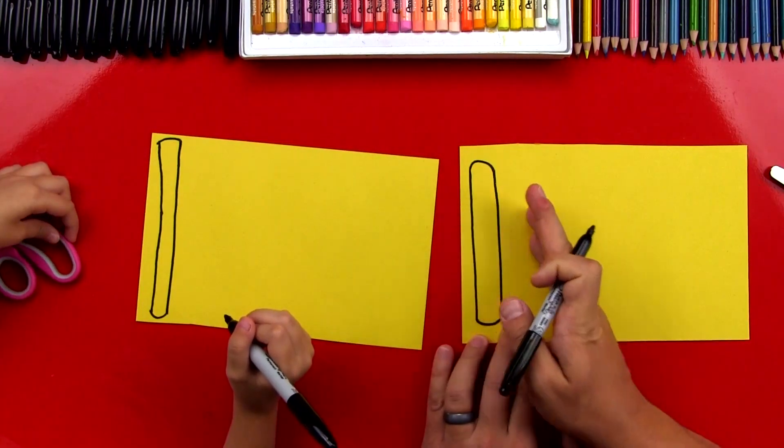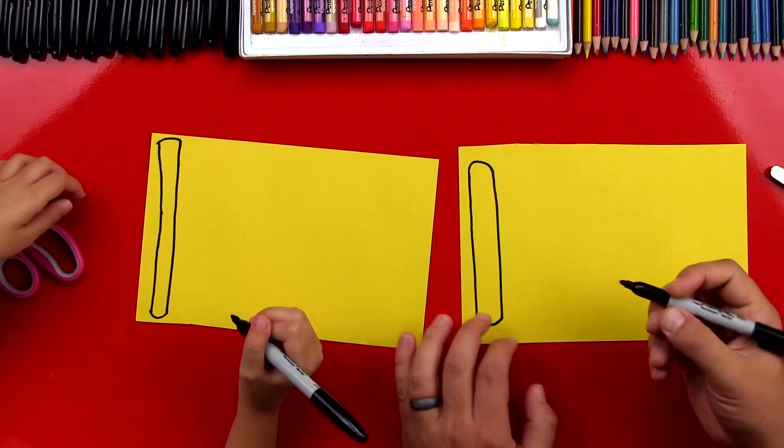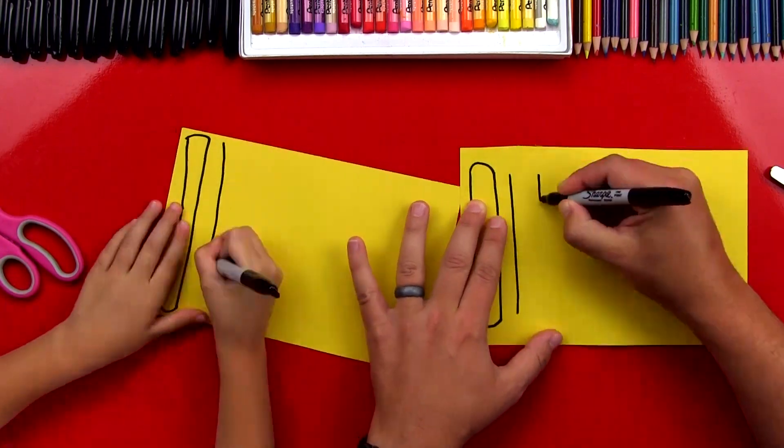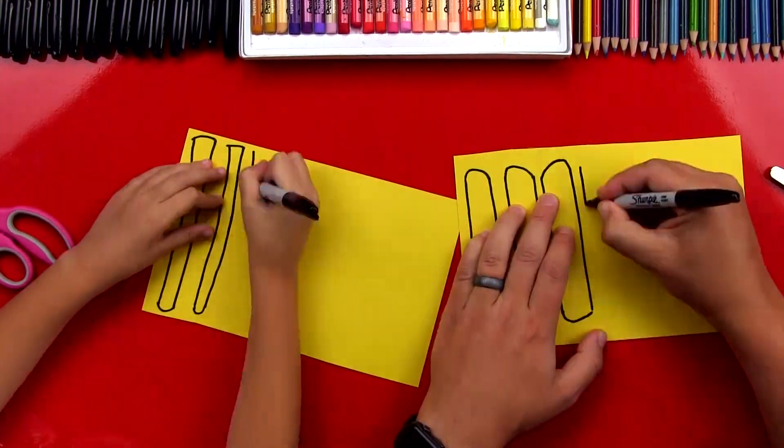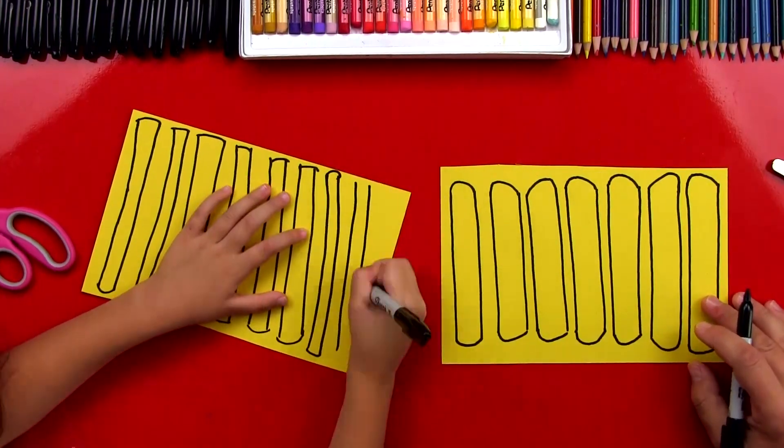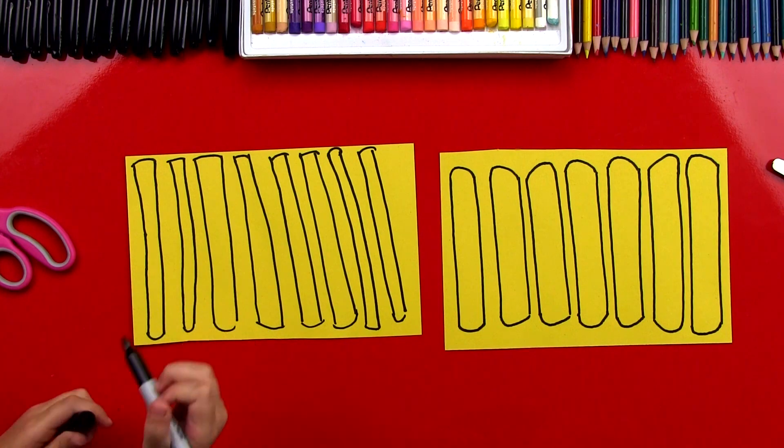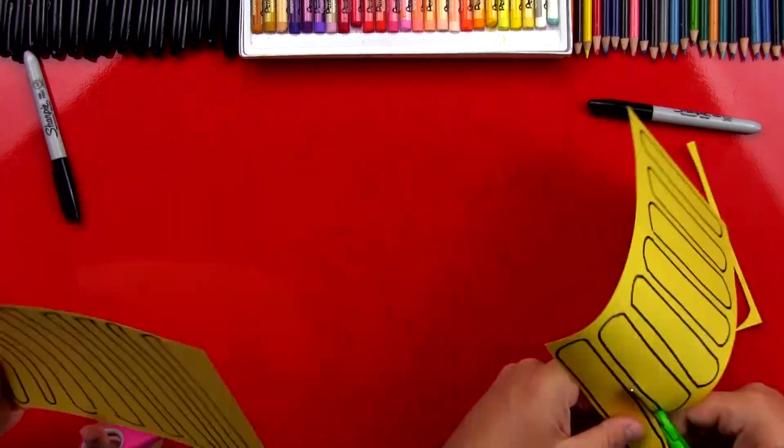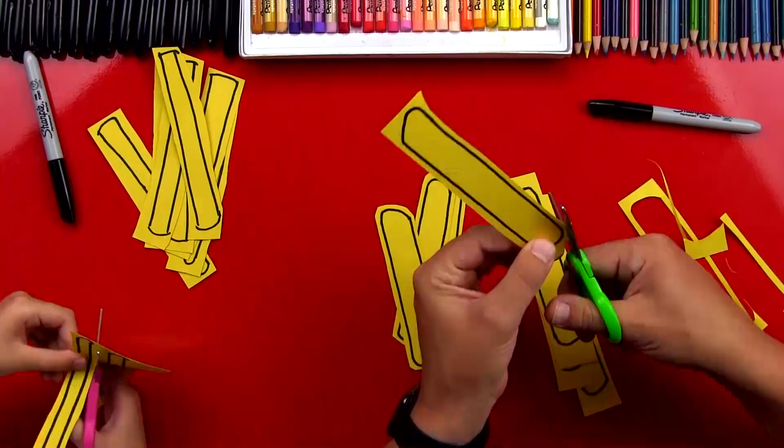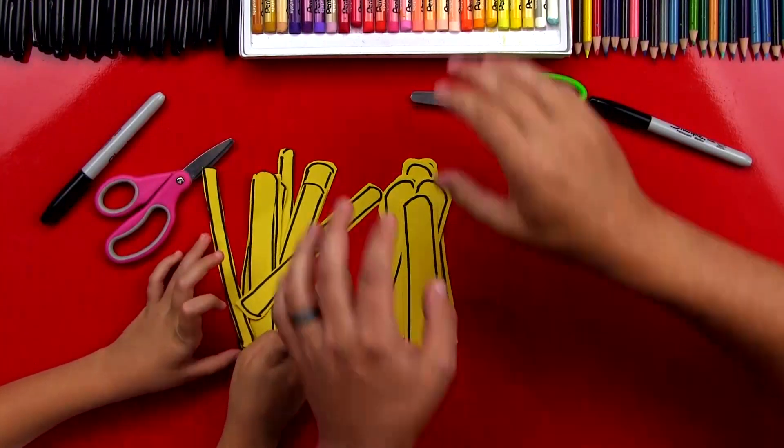Now we're going to repeat those same steps across the whole sheet of paper. You ready to fast forward? Yes. Let's do it right now. Good job. We've got a lot of french fries, don't we? Let's fast forward. We're going to cut them out. We've got our french fries cut out.